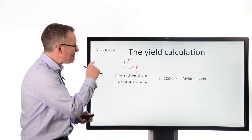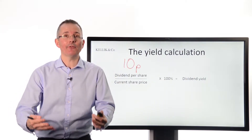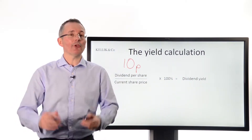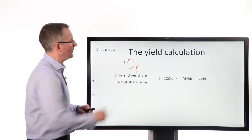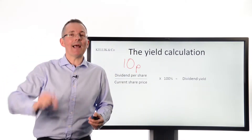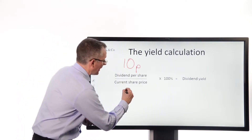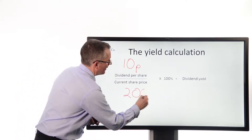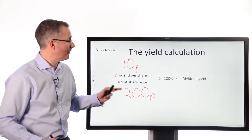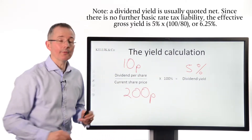In both cases, the dividend per share is an annual figure. Companies decide what proportion of their profits to pay out as dividends — it's the total dividend divided by the number of shares in issue. So in simple terms, if a company pays a total dividend of £10 million and there are 100 million shares in issue, that gives you 10p per share. Divide by the current share price — let's say 200 pence — and 10p as a percentage of 200 pence is about five percent.